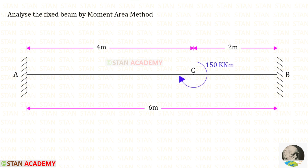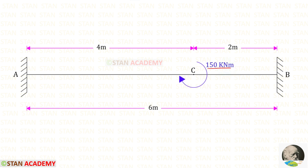Hello everyone. Today we are going to analyze this fixed beam by the moment area method. The span of the beam is given as 6 meters. This beam carries a concentrated moment of 150 kilo Newton meters at a distance of 4 meters from the left support. The concentrated moment is acting in the clockwise direction.